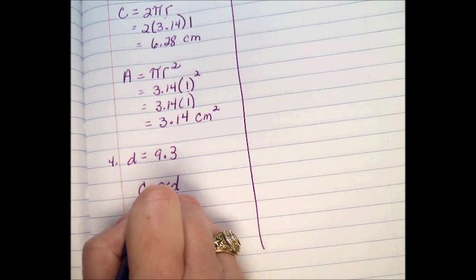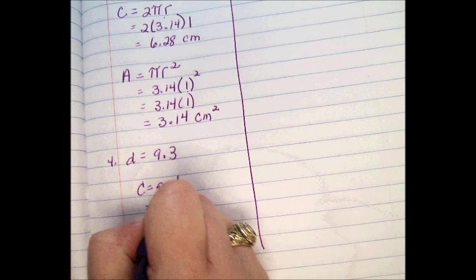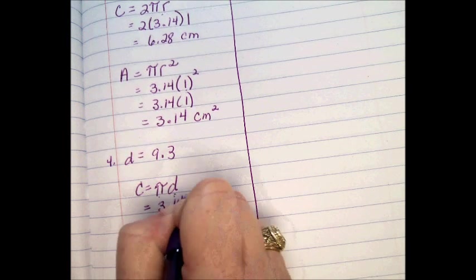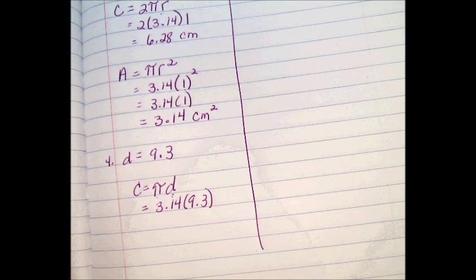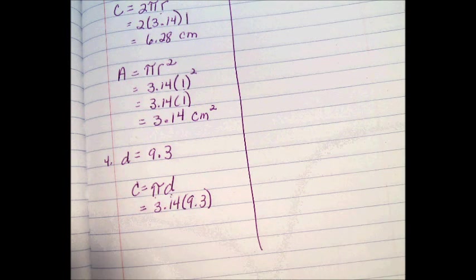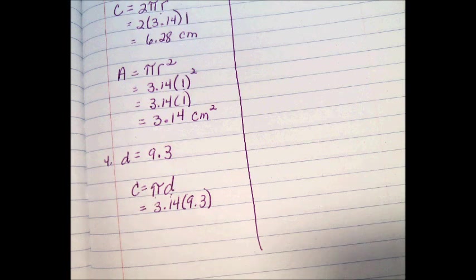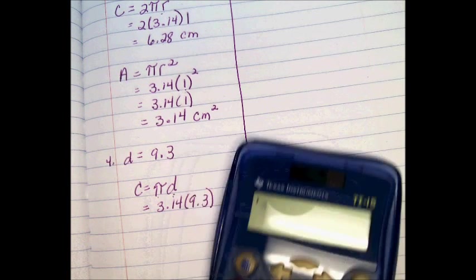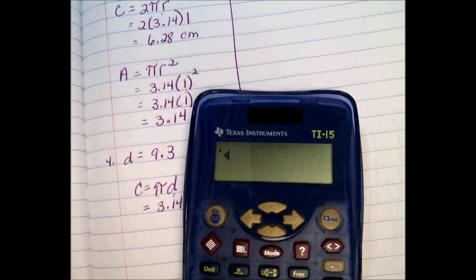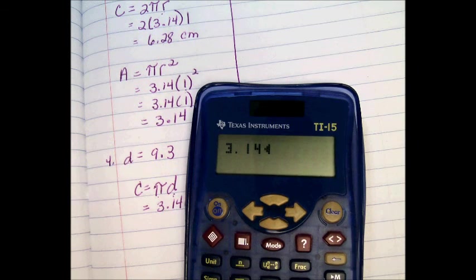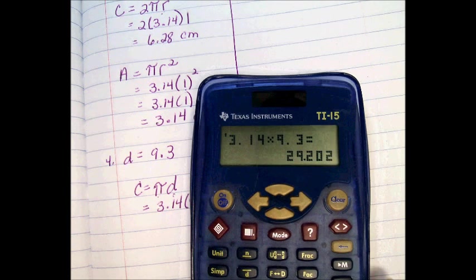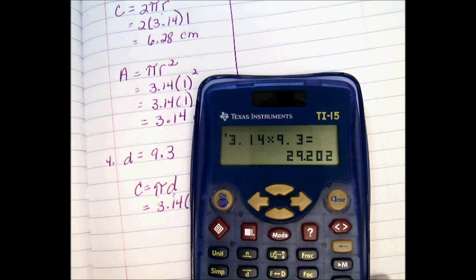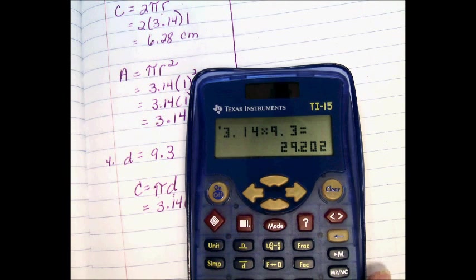For formula math, it's okay with me if you use a calculator as long as you write the formula and plug in the values. So I'm going to go ahead and use a calculator. 3.14 times 9.3 equals 29.202. And my directions say to round to the nearest tenth. So that's 29.2. Circumference is just a distance. So that's meters.